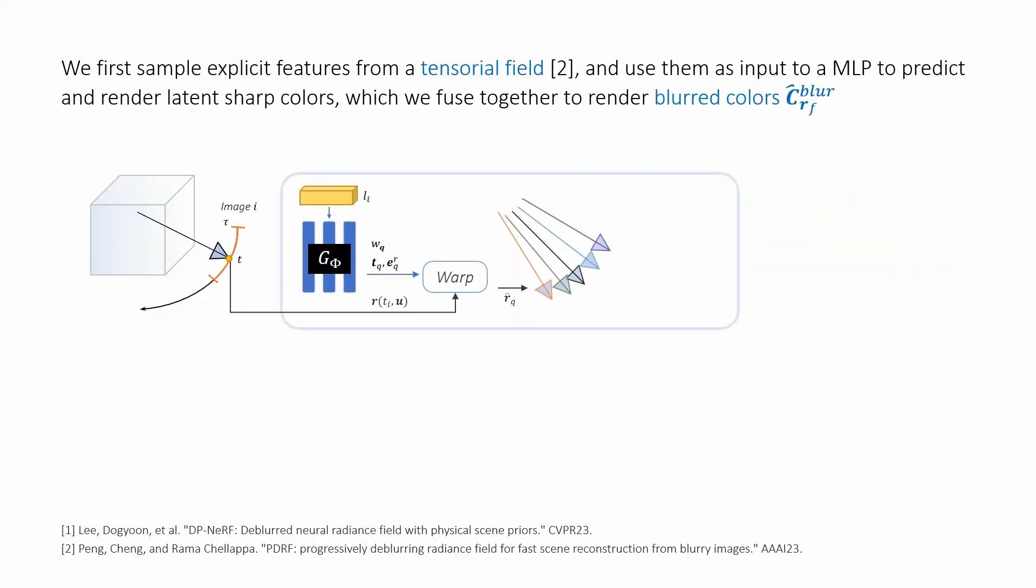Starting with a motion-blurred image with known middle exposure pose, our method begins by estimating the camera's motion during the exposure. We then use the set of transformed rays for volumetric rendering. This involves first sampling explicit tensorial features, which are then fed into a multi-layer perceptron to render the colors.